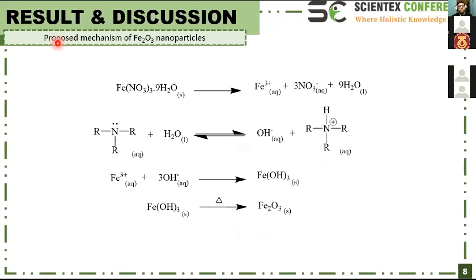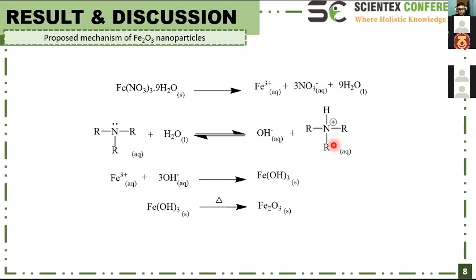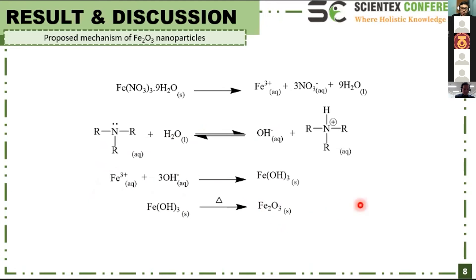We propose the mechanism of iron oxide nanoparticle fabrication. First, iron(III) nitrate nonahydrate is dissolved in water — this is the precursor — forming Fe³⁺, nitrate ions, and water molecules. Then, the amine of alkaloid compounds, acting as a base, reacts with water to form hydroxide ions and alkylammonium ions. The hydroxide ions then reduce Fe³⁺ to form iron hydroxides, which are subsequently calcined to form iron oxide nanoparticles.